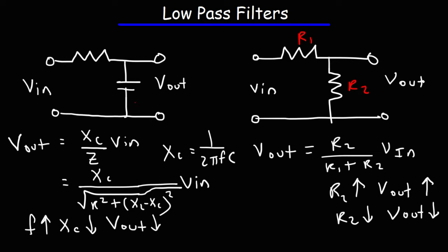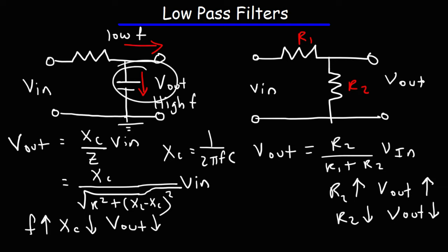High-frequency signals will pass through the capacitor, while low-frequency signals are impeded by it — they can still pass through, but with much more impedance. So the low-frequency signals will go towards the output, whereas the high-frequency signals will be sent to ground. That's how the low-pass filter works: it passes low-frequency signals to the output while attenuating high-frequency signals.